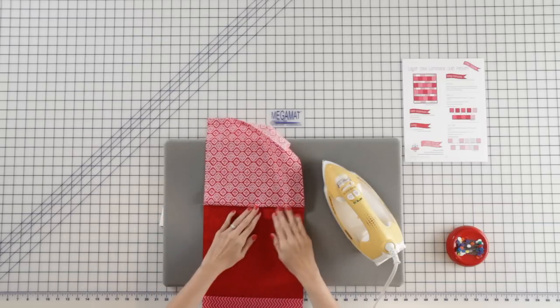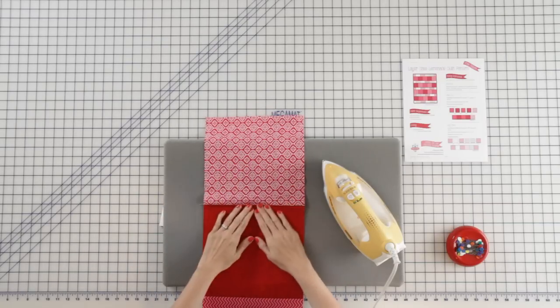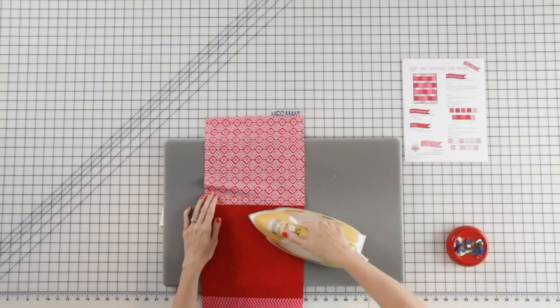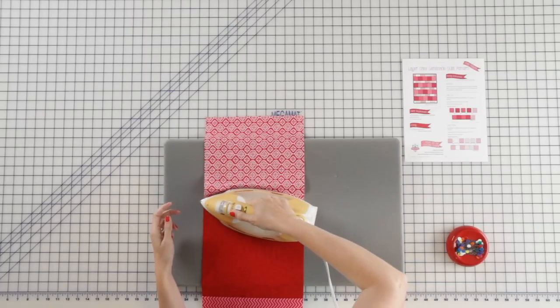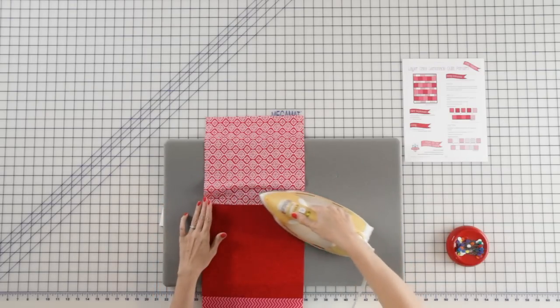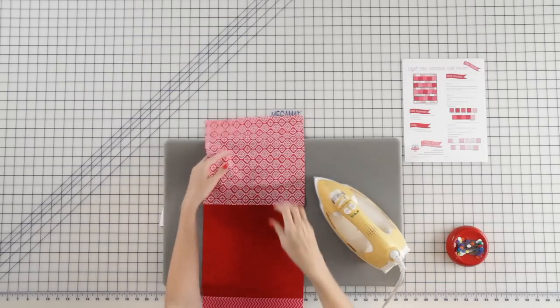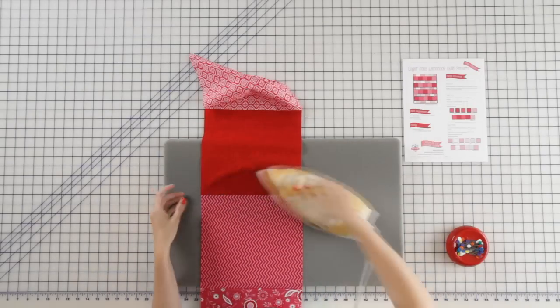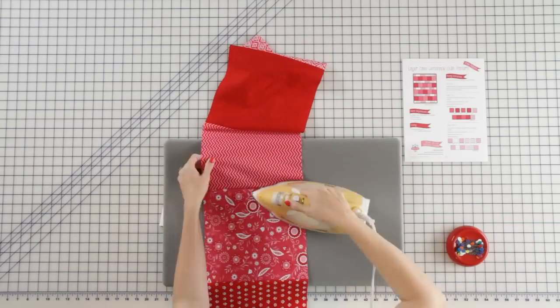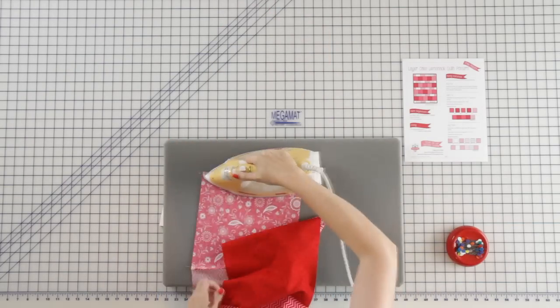So now you're going to push it open. Just finger press a little bit out and just press your seam. You're going to repeat on all of your seams. Go ahead and finish the rest of your dark rows. And I'm going to show you how to piece your light rows together.